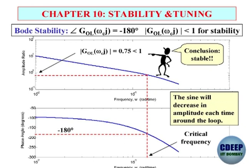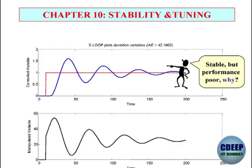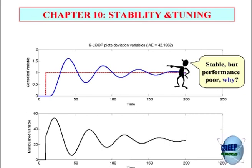Conclusion: the system is stable. Why? Because the sine will decrease in amplitude each time it travels around the loop — the loop has a gain of 0.75. So anything introduced, first time it is 0.75 of that, second time 0.75 of that, and so on as it travels. Stability is the first consideration when you design a control system — you must make sure that the closed loop is stable.